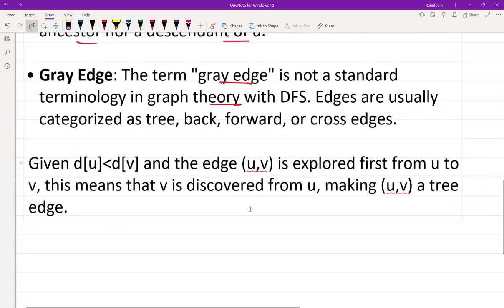So if you can see here, d[U] is less than d[V]. The length d[U], which is from the source node to U, is the shortest path. d[V] is greater than d[U], and we are exploring from U to V such that the edge (U, V) is explored first from U to V